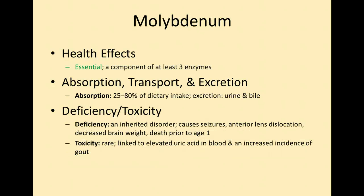Molybdenum is an essential component of at least three enzymes. Deficiency can cause seizures, lens dislocation, and decreased brain weight if insufficient before age one. Toxicity is usually rare — it's hard to get too much in your diet — but excess molybdenum could cause elevated uric acid and gout.